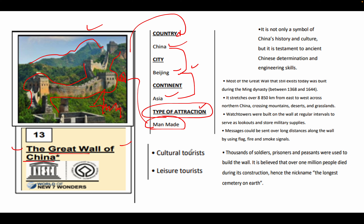The tourist profile — meaning the tourists who usually visit the Great Wall of China — includes tourists interested in learning more about Chinese culture. There are also leisure tourists who go to relax and have quality time with family and friends. Additionally, architectural tourists visit to see how the wall was designed and its structure, and tourists interested in history and the Seven Wonders of the World.